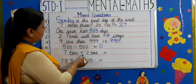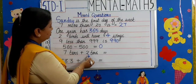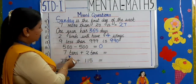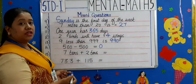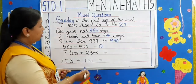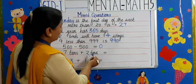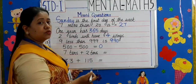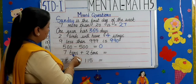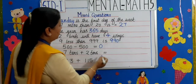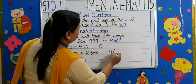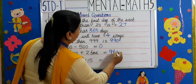Moving on to the next one: 7 tens plus 2 tens. 7 tens is 70, 2 tens is 20. So the answer will be 9 tens, which is 90.